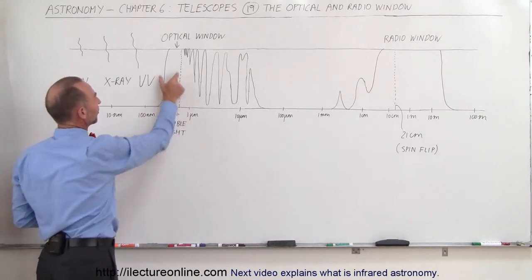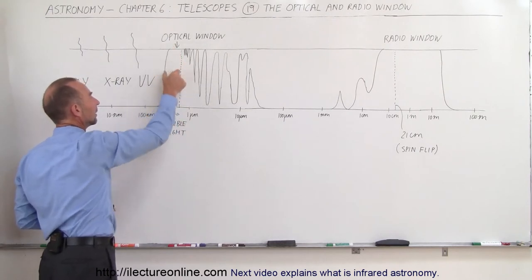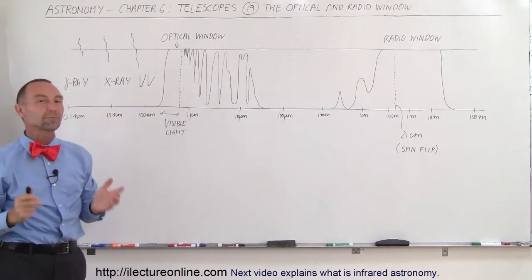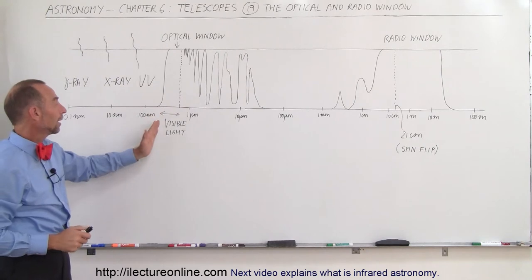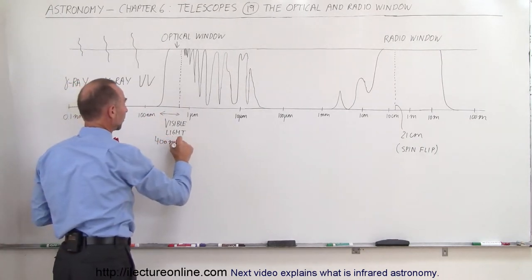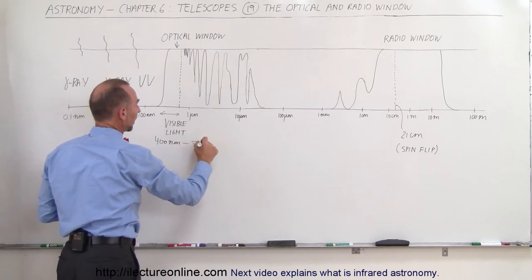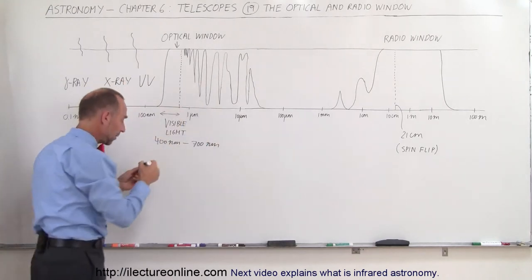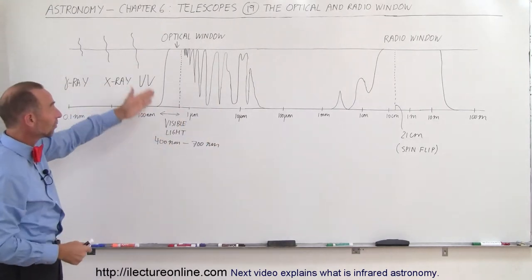Here's what we call the visible window. The atmosphere is completely transparent to visible light rays anywhere from 400 to 700 nanometers. So from 400 to 700 nanometers, the atmosphere is completely transparent and radiation can go both ways, no problem.